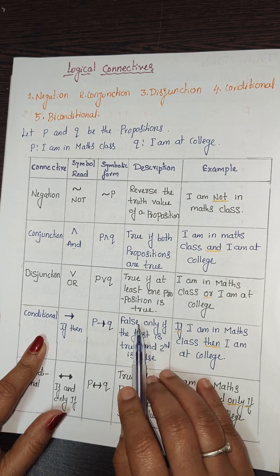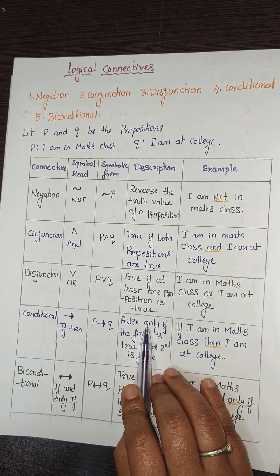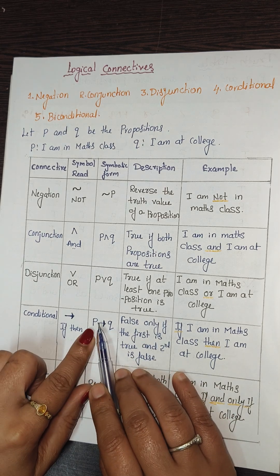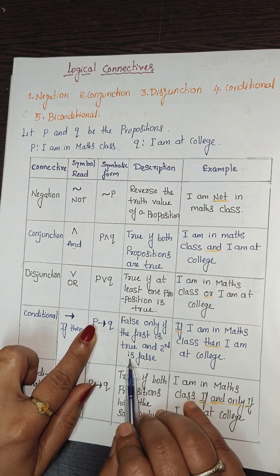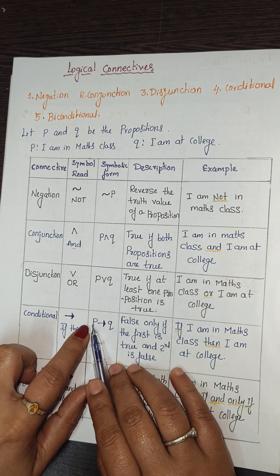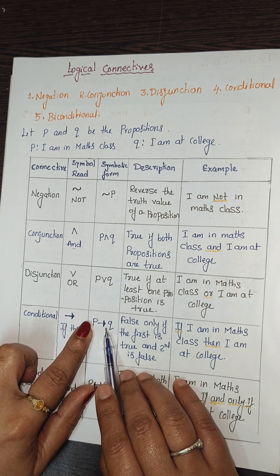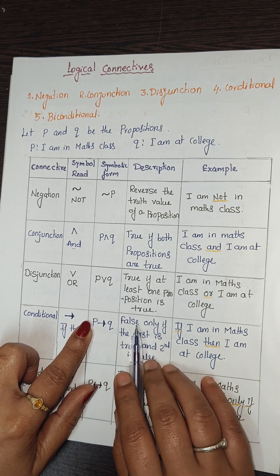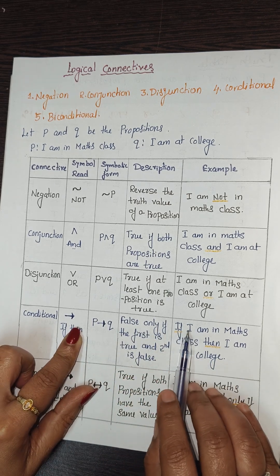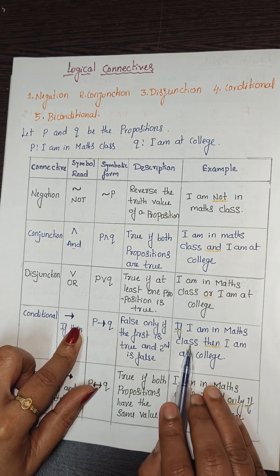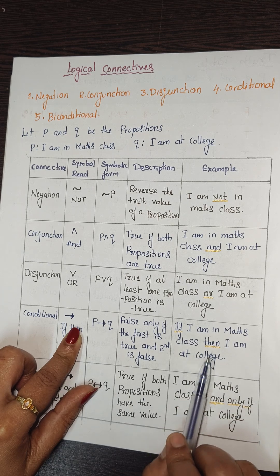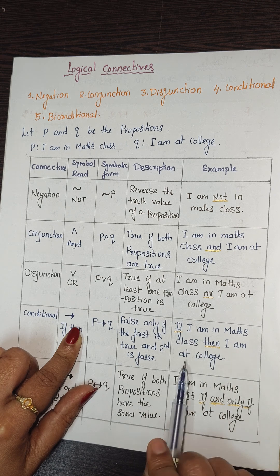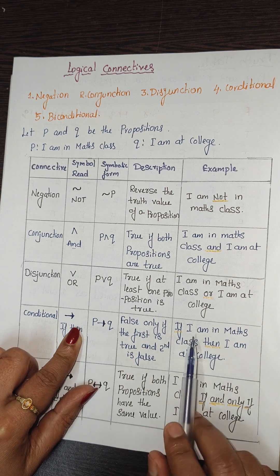Conditional is read as 'if p then q,' shown with an arrow mark (→). It is false only when the first proposition is true and the second is false. Otherwise, all other combinations are true. For example: 'If I am in maths class, then I am at a college.'